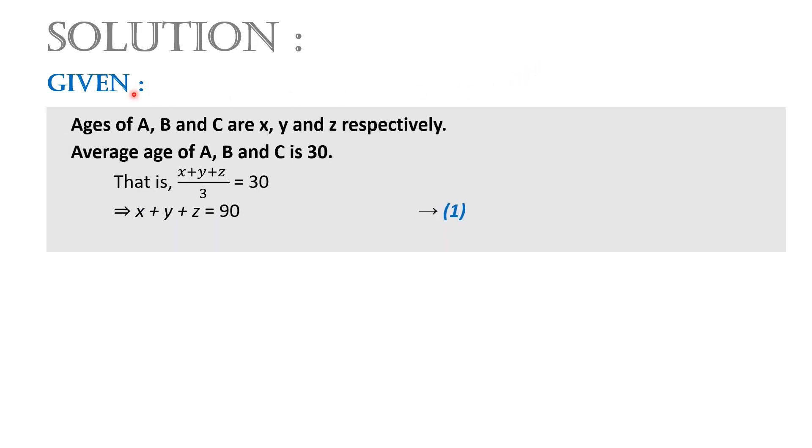Let us see what is given in the question. Ages of A, B and C are X, Y and Z respectively. Average age of A, B and C is given to be 30, i.e. X plus Y plus Z divided by 3 equals 30. On cross multiplying we get X plus Y plus Z equals 90. Let this be equation 1.